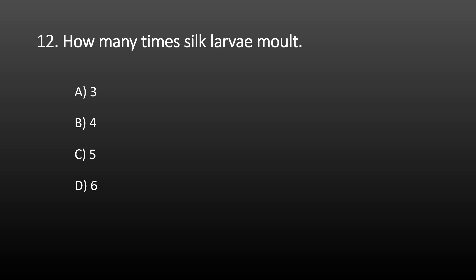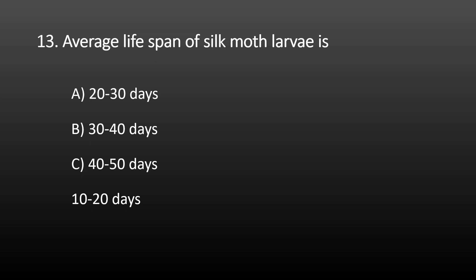Next MCQ: how many times do silkworm larvae molt? Options are 3, 4, 5, and 6. There are 5 larval instars present during silkworm development. Molting means the casting of skin. If there are 5 instar larvae, then the silkworm larvae molt 4 times. The correct option is 4. If there were 6 instars, then molting would occur 5 times. Since there are 5 instars in silkworm, the correct answer is 4 times.